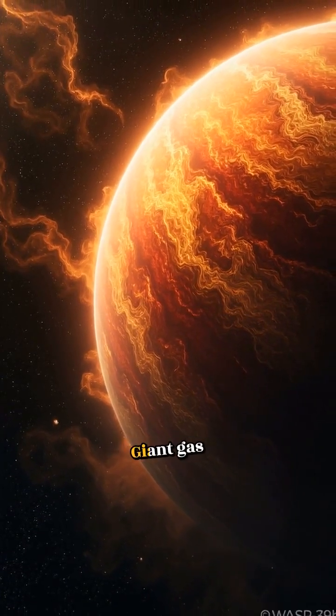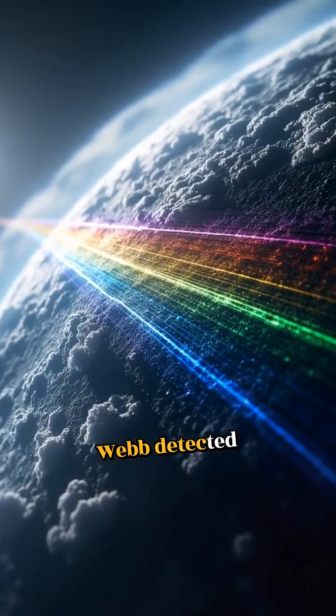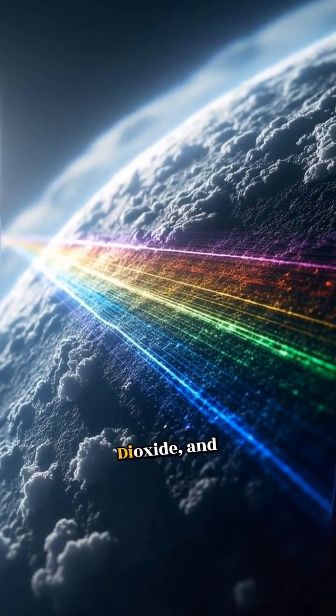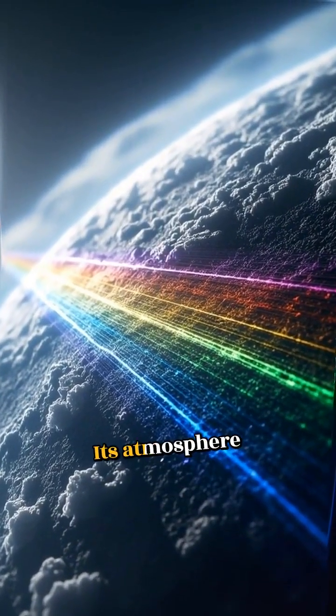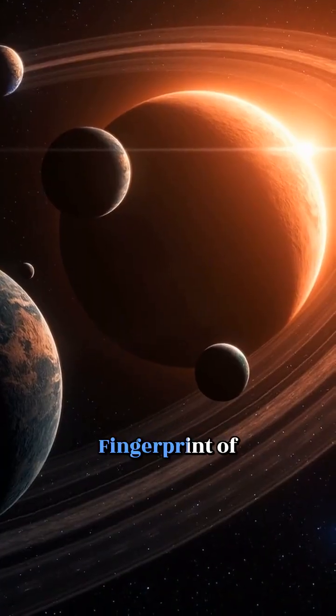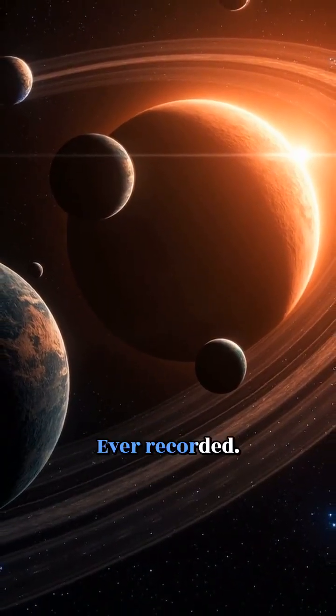WASP-39b, a giant gas planet. Webb detected sulfur dioxide, carbon dioxide, and water vapor in its atmosphere. The first chemical fingerprint of an alien world ever recorded.